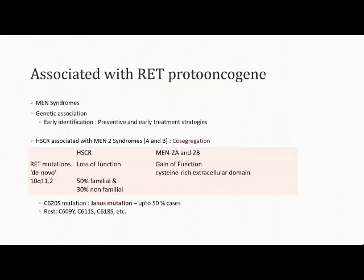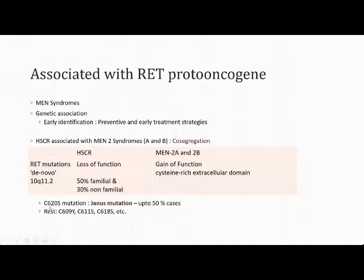Regarding RET proto-oncogene associations, early identification of genetic associations is essential for preventive and early treatment strategies. In Hirschsprung disease, RET mutations occurring de novo are usually loss-of-function, seen in 50% of familial and 30% of non-familial cases. In MEN 2a and 2b, there is a gain-of-function mutation especially in the cysteine-rich area of the extracellular domain. For co-occurrence of both conditions, certain co-segregation mutations exist — such as the C620S (Janus mutation) — present in up to 50-60% of cases where Hirschsprung and MEN syndromes occur together.